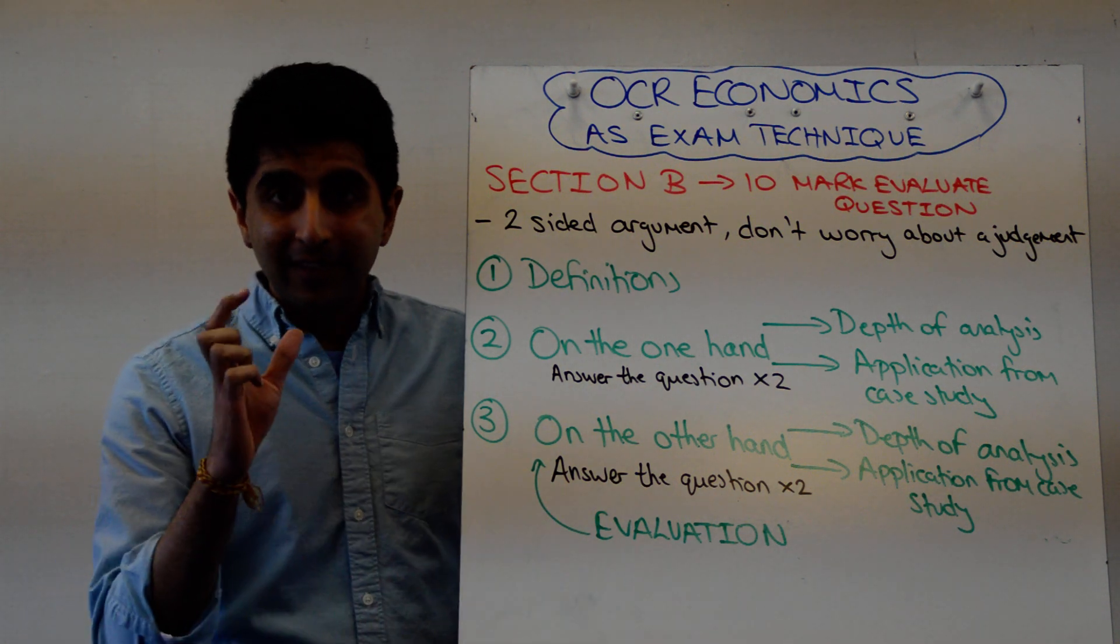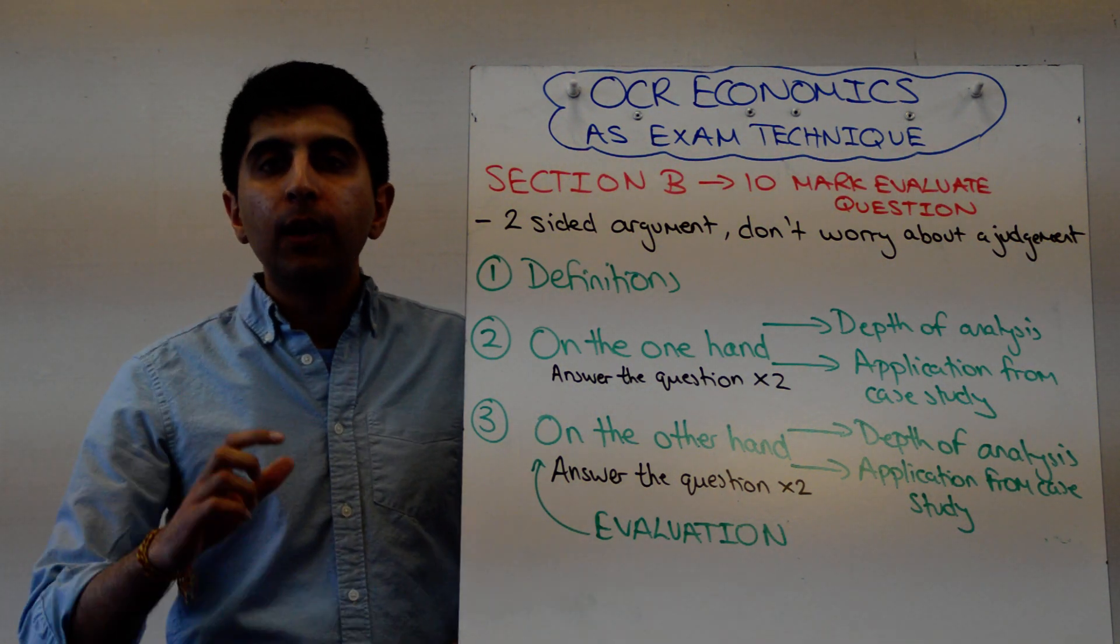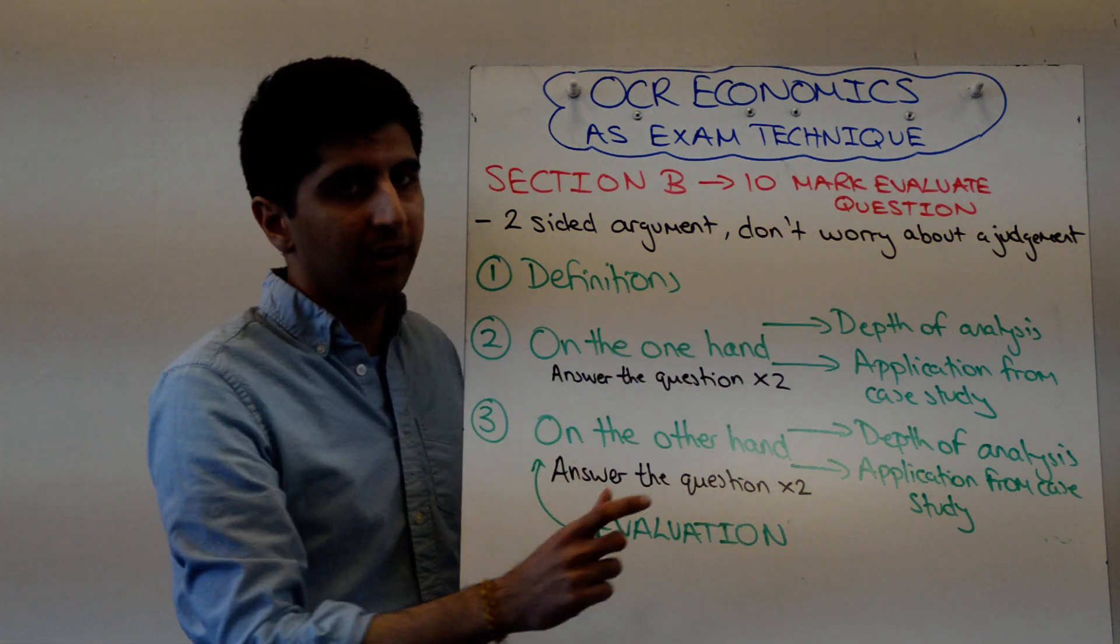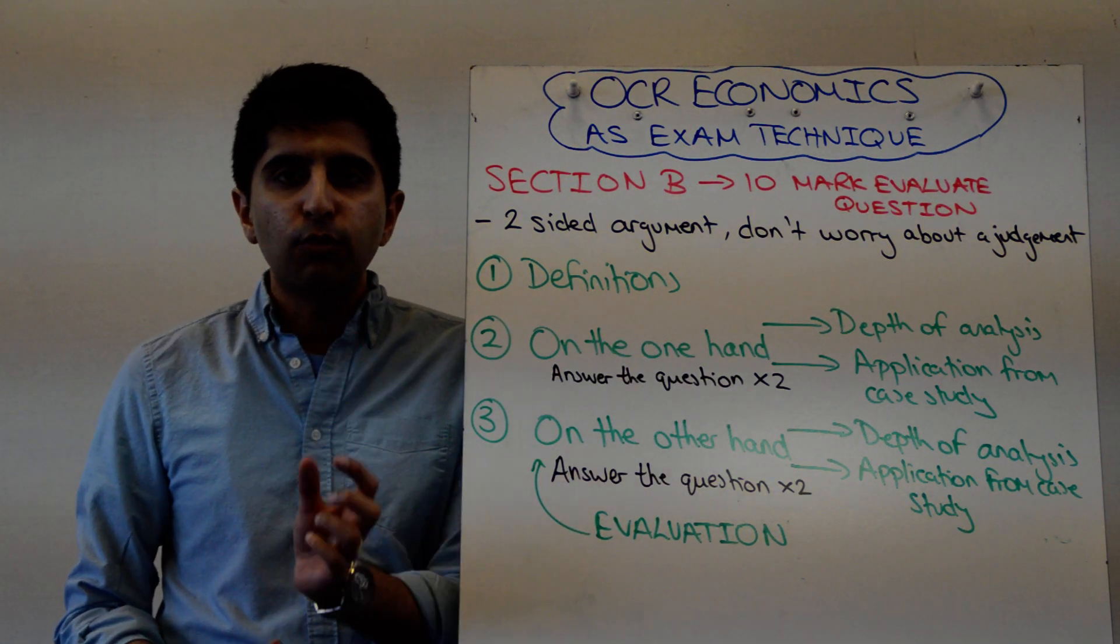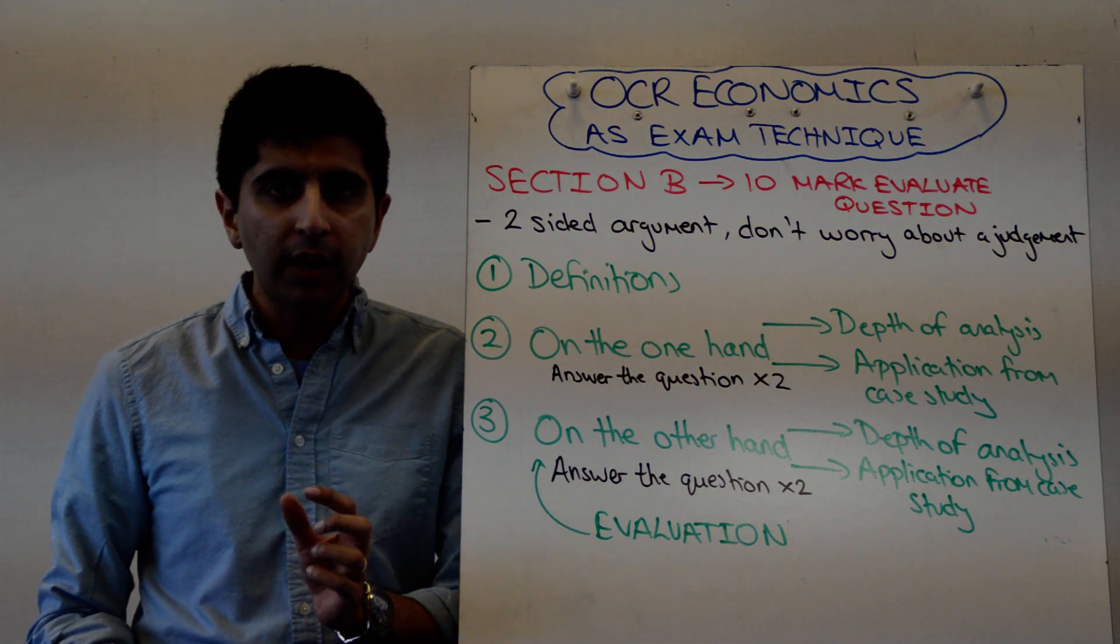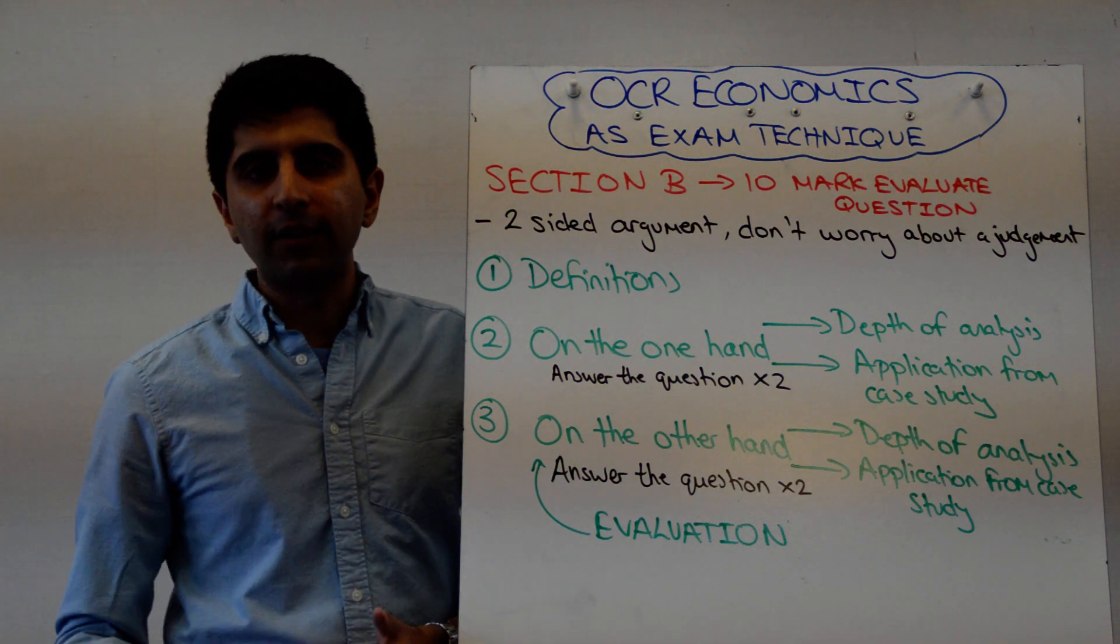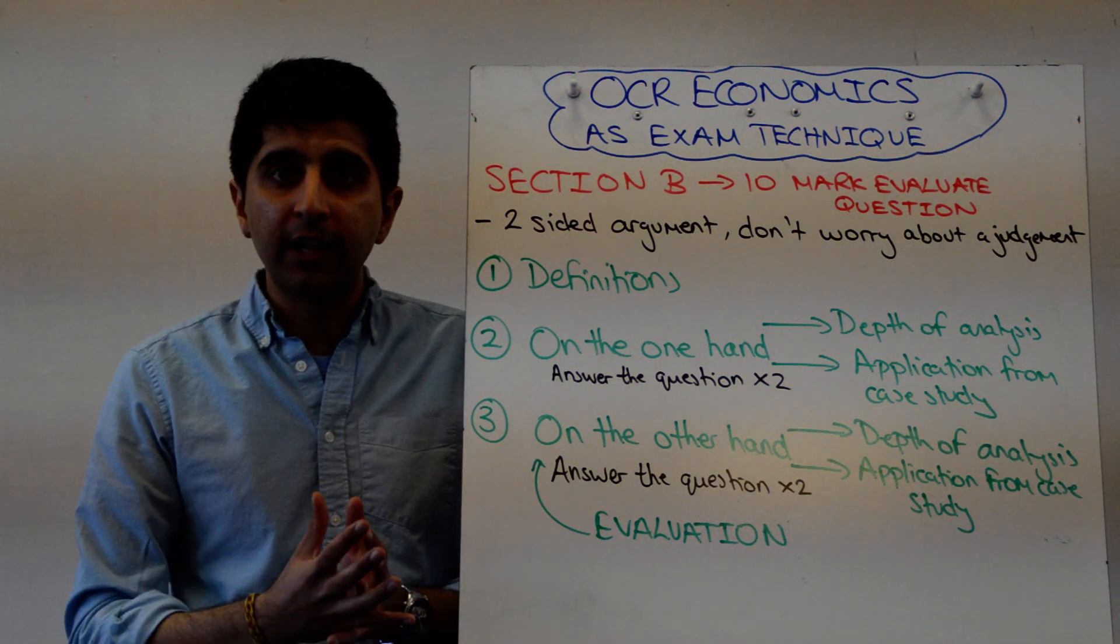You're going to have this 10-marker. The last question in Section B will be this 10-mark evaluate question, and that means you need to write a two-sided argument, but you don't require a judgment. OCR examiners say it's only 10 marks, you don't need the judgment, you just need a two-sided argument.